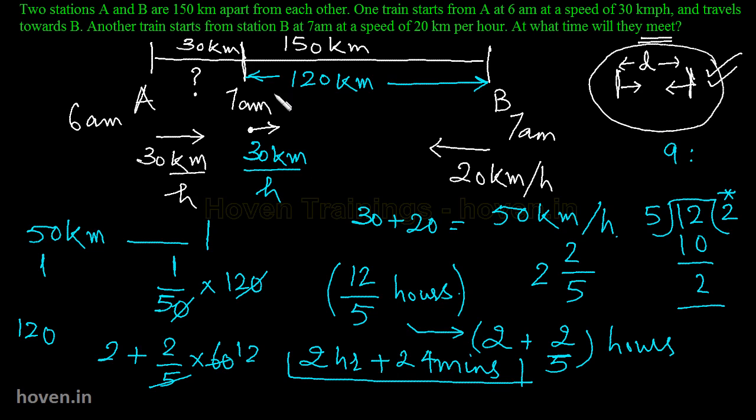Toh yeh answer ab hai ha humare paas. Yeh 7 bajay yahan peh kahanin shurru hui thi. Uske 2 gandte 24 minit baad yeh milen ge. Toh yeh milne ka time kiya ho jata hai. 7 जमादो 9 बच के 24 मिनट yeh answer होगा उस option में